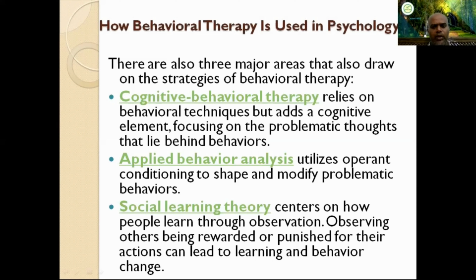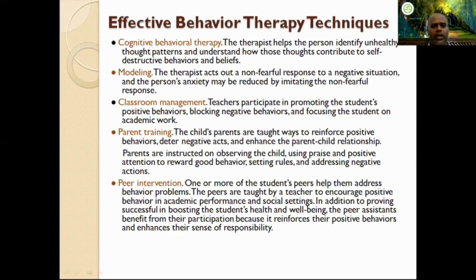The first type is cognitive behavior therapy, which focuses specifically on the patient's problem — whether health issues or psychological problems. The second is applied behavior analysis, which modifies behavior by shaping the specific problem faced. The third is social learning therapy, which involves observing rewards and punishments to shape social behavior — if you do any negative activity, consequences are given.